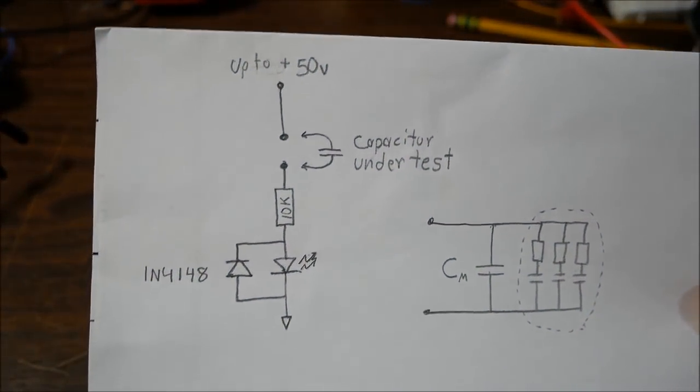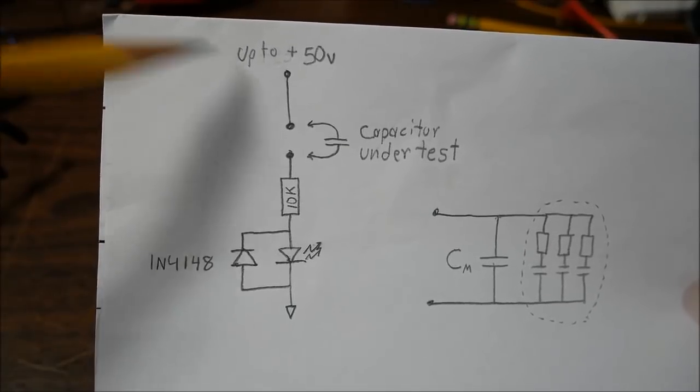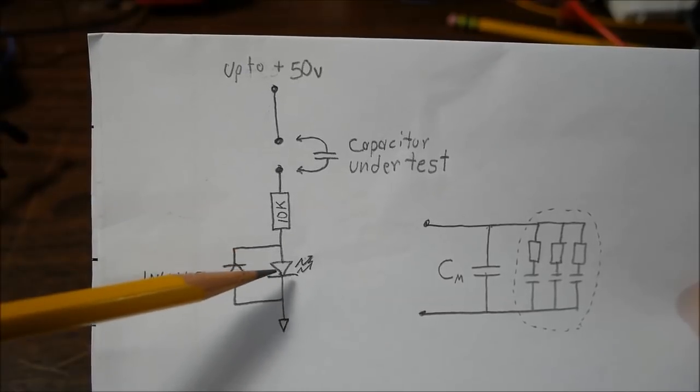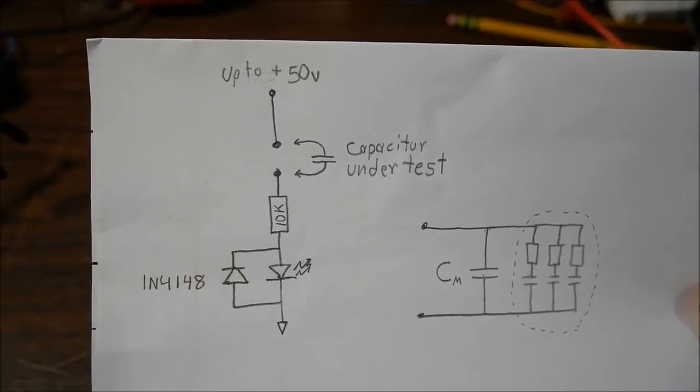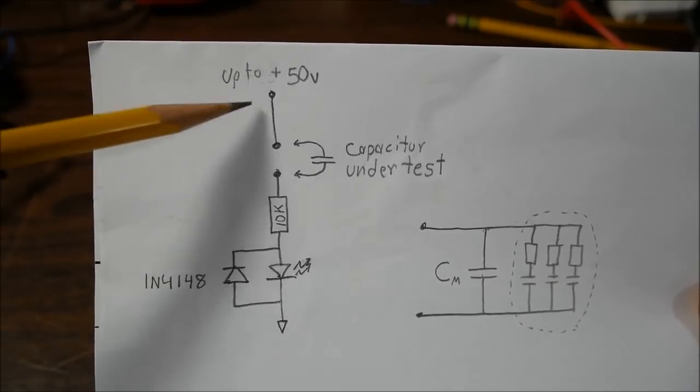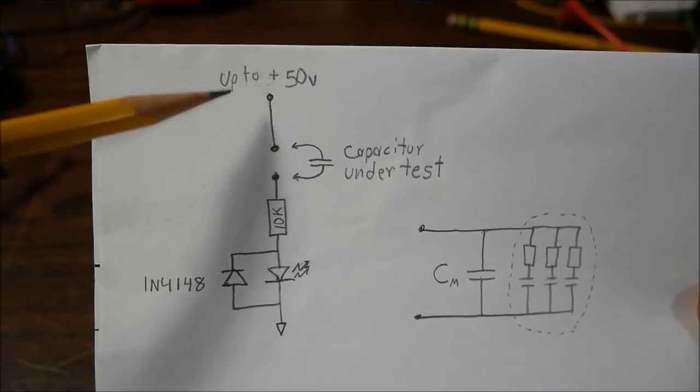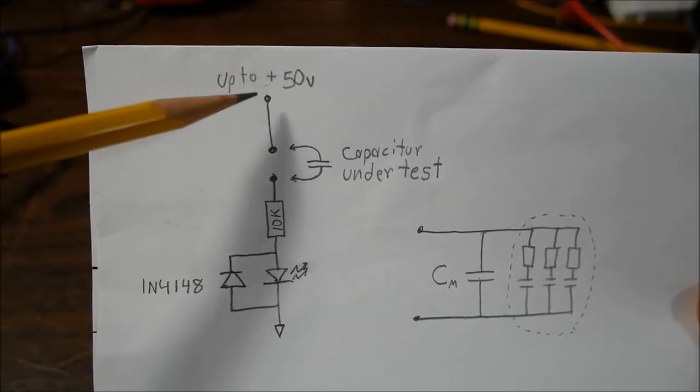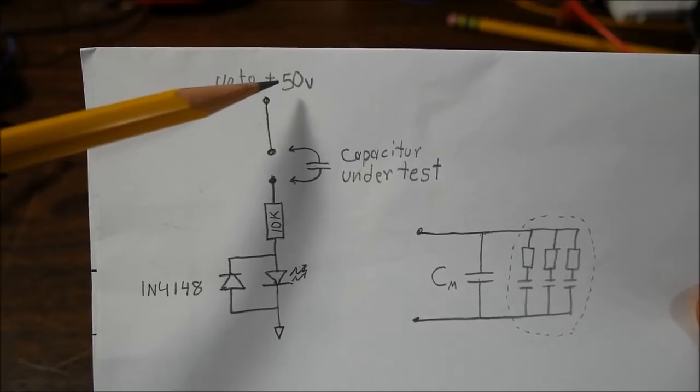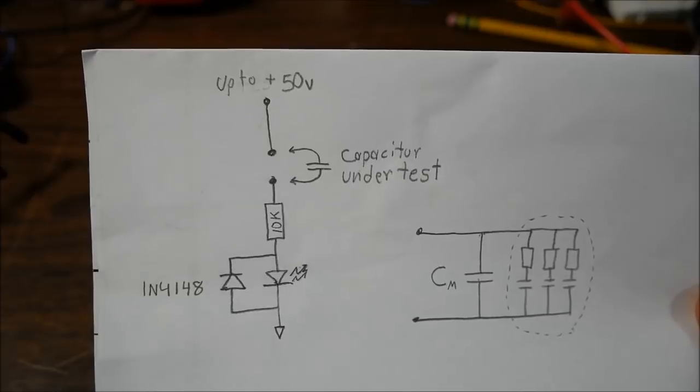So right here is the basic circuit. Well before you build the circuit, well I guess you could go ahead and build the circuit, but you need to qualify the actual LED before you can use the circuit. So let me explain what's happening here. Well you have a supply voltage, and with the circuit you could go up to 50 volts. And when you do that, you just have to be mindful of the maximum voltage of the capacitor you're using.